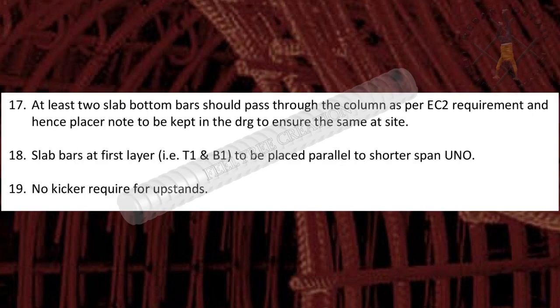Point 17. At least two slab bottom bars should pass through the column as per EC2 requirement, and hence a placer note to be kept in the drawing to ensure the same at site.